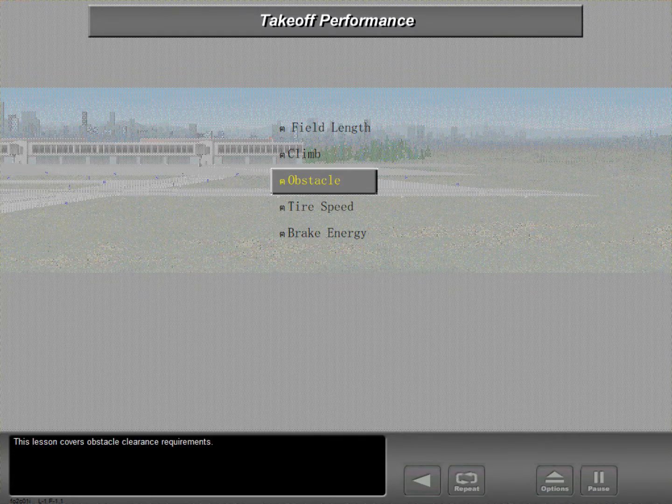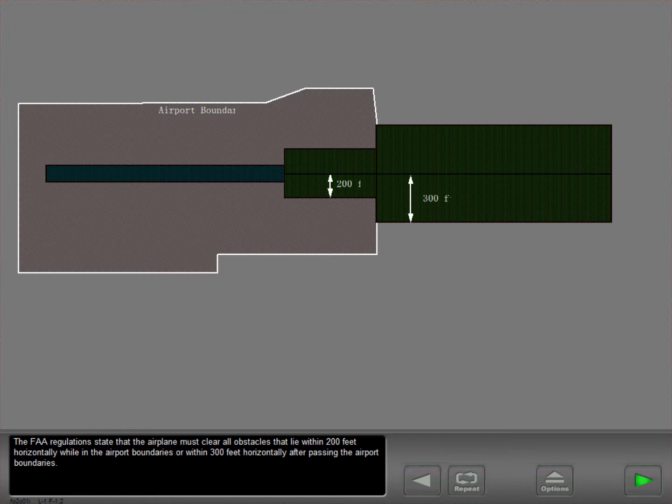This lesson covers obstacle clearance requirements. The FAA regulations state that the airplane must clear all obstacles that lie within 200 feet horizontally while in the airport boundaries or within 300 feet horizontally after passing the airport boundaries.